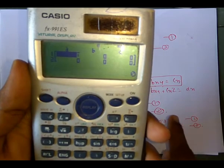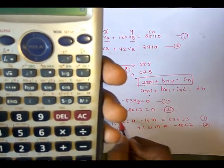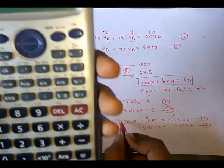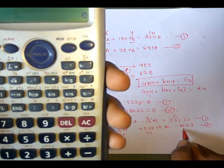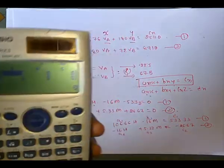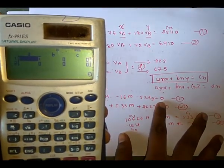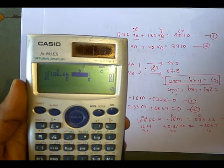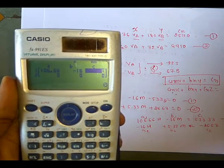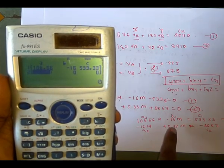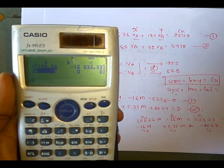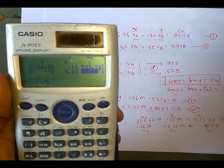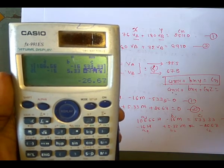A tabular form appears asking for a, b, and c values. For equation one: a1 equals 106.66, b1 equals minus 16, c1 equals 533.33. For equation two: a2 equals minus 16, b2 equals plus 5.33, c2 equals minus 26.67. Be careful with the signs. Press equals after each entry.